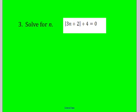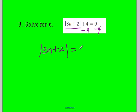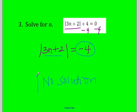Moving on to Problem 3 — this one is a little bit trickier. There is an absolute value plus 4. You cannot break it into two problems until the absolute value is by itself. So the first thing I would do is subtract 4, giving me the absolute value of 3n plus 2 equals negative 4. Now, remember — we're measuring distance. Does distance ever equal a negative? No. So this is an example of no solution.